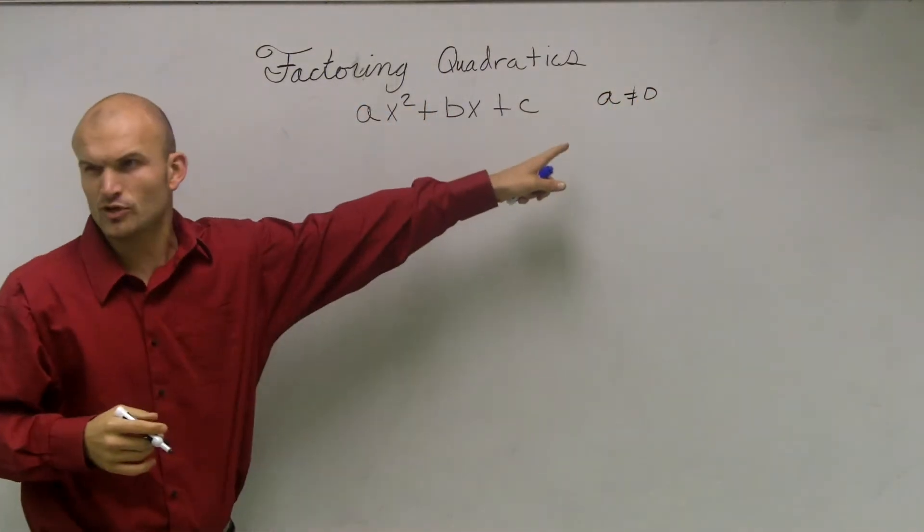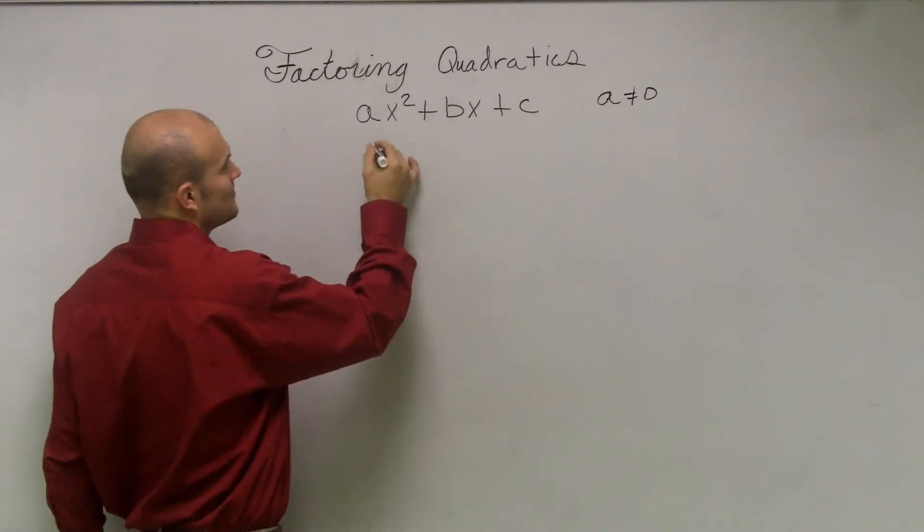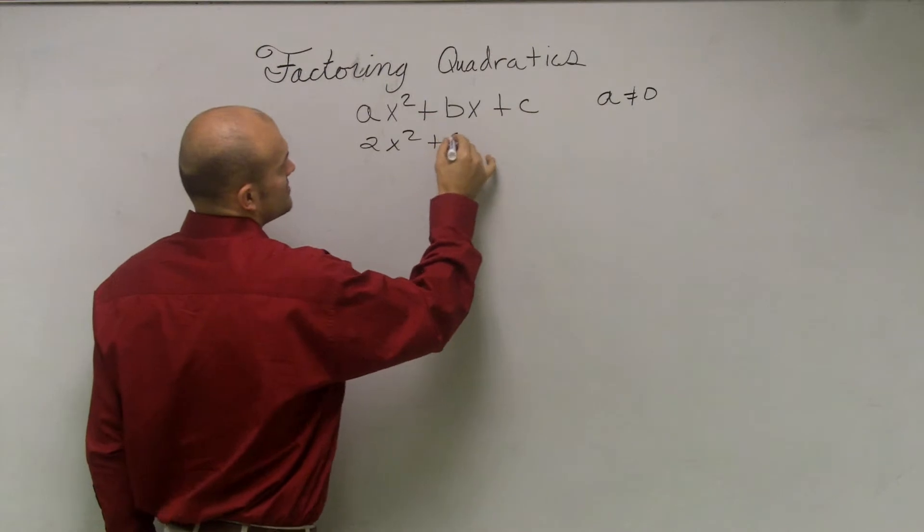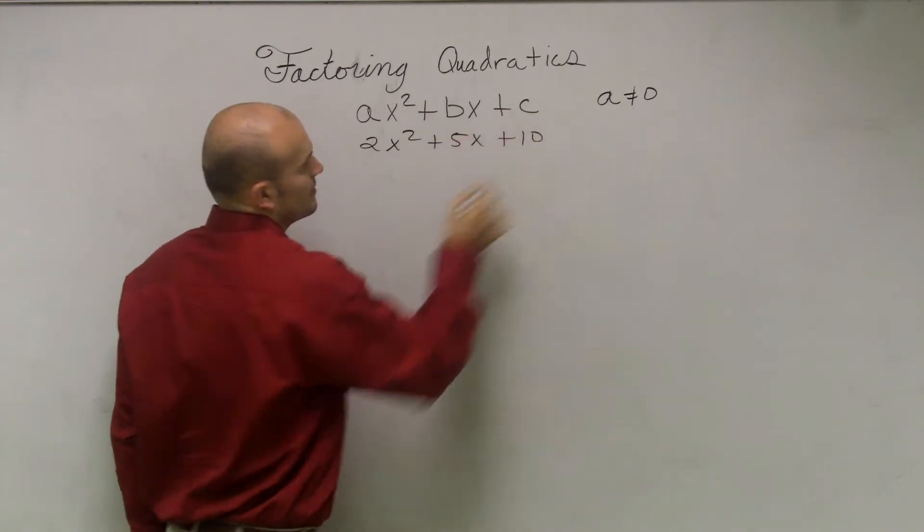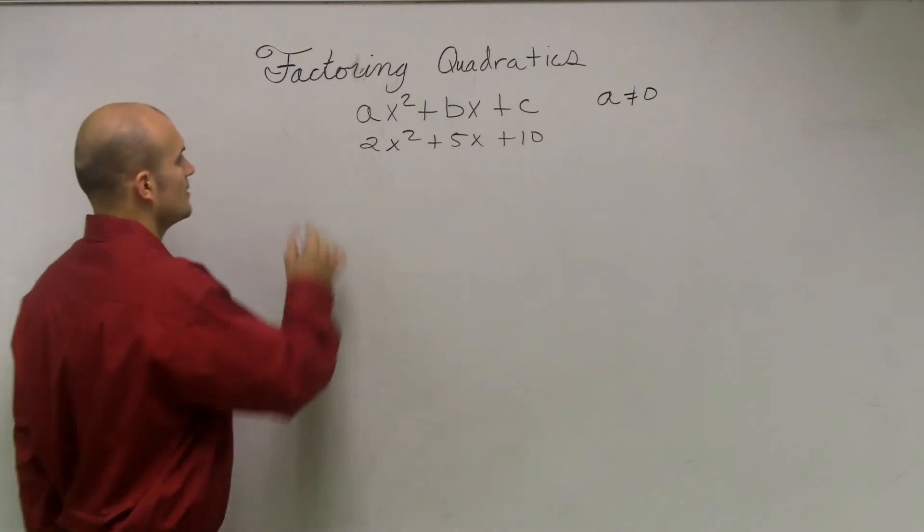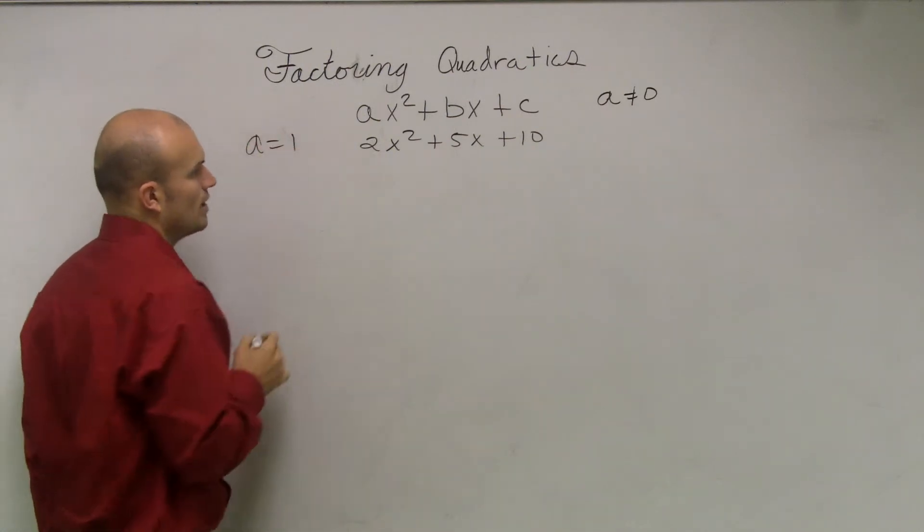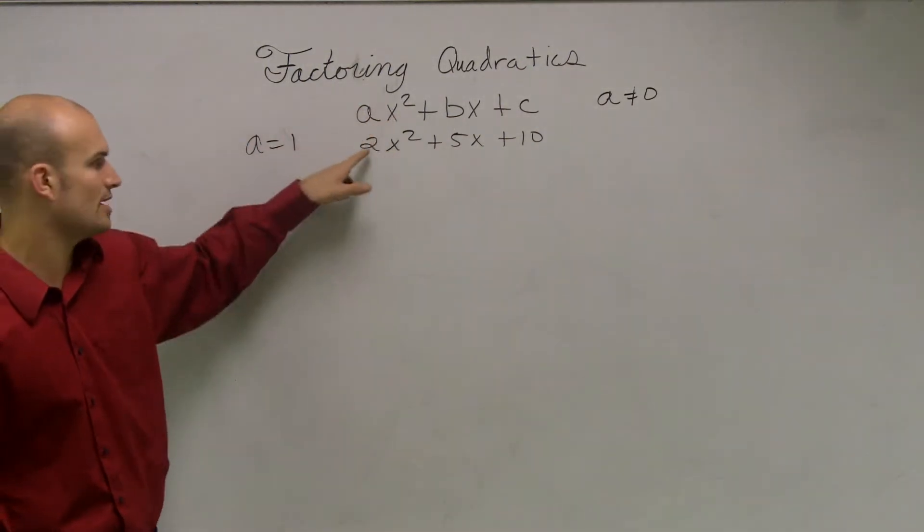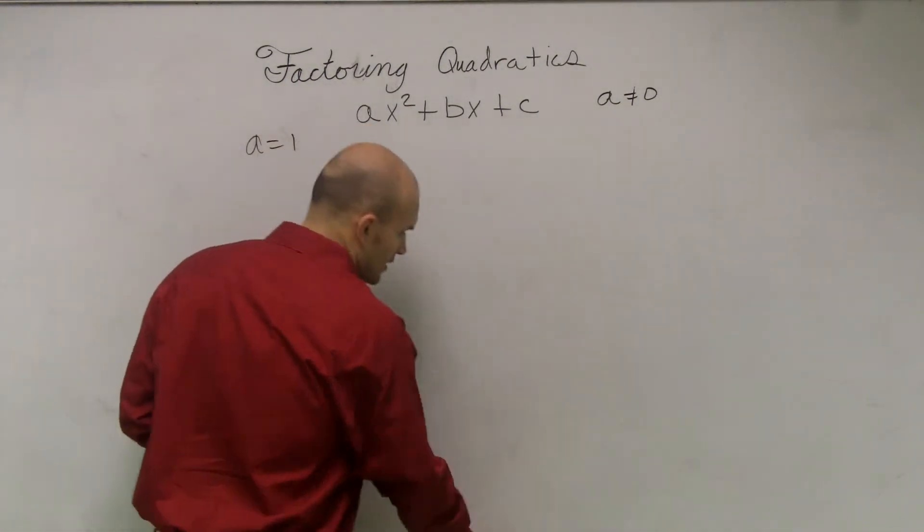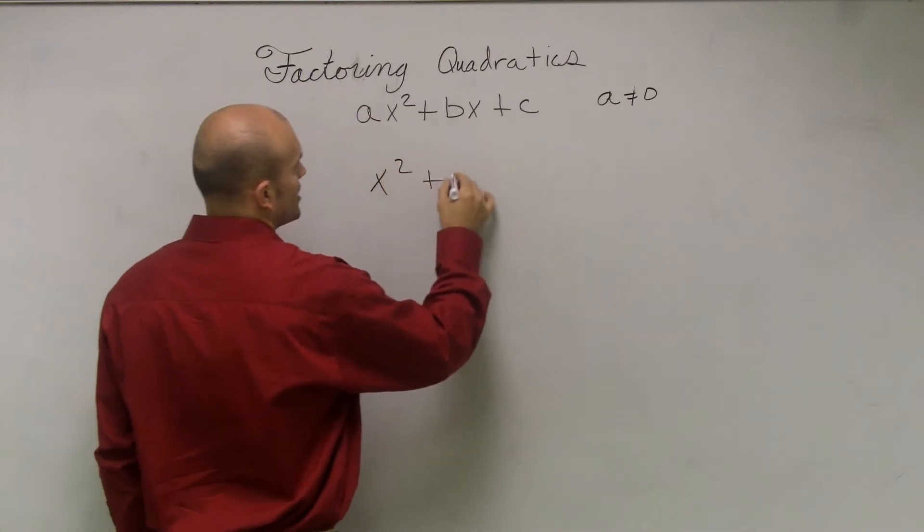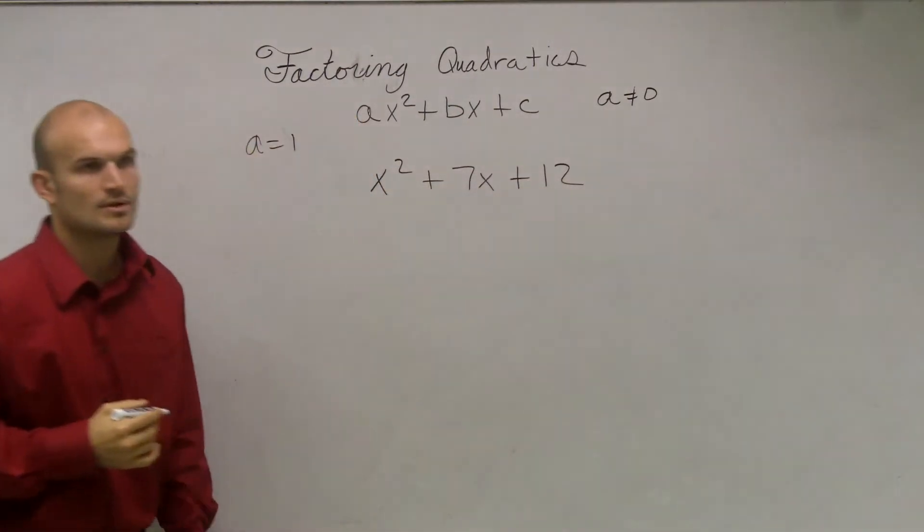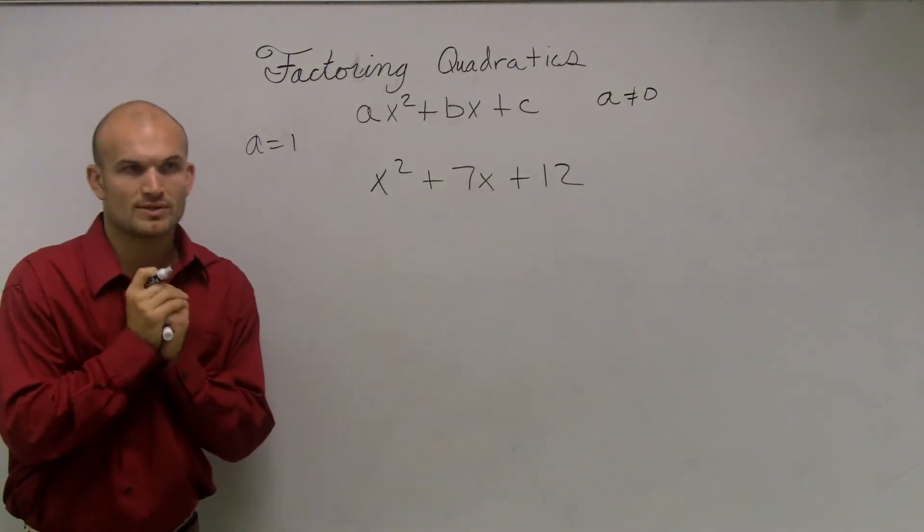Alright, so these are real numbers, so it could be anything. We could say, you know, 2x squared plus 5x plus 10. That's a quadratic. But the quadratics we're going to deal with are when a equals 1. So that means my number in front of x squared is going to equal 1. So the quadratic that we're going to work with today is x squared plus 7x plus 12.